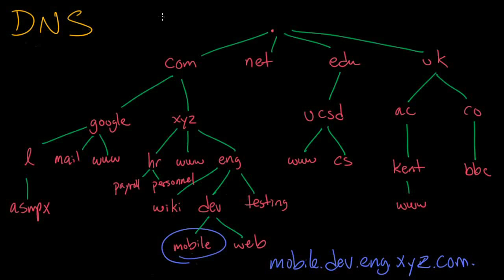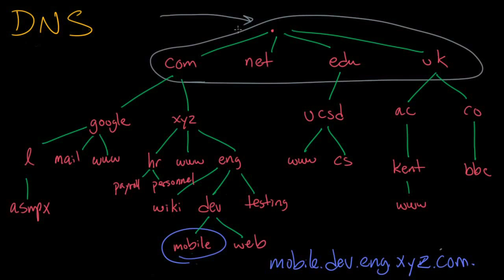The query is going to come into the top and hit the root zone first. The root name server, which only knows about itself and the top-level domains like com, net, and edu, is going to look at the query and see that it knows about com, which is over here on the right-hand side. So the query gets passed down to the com zone.